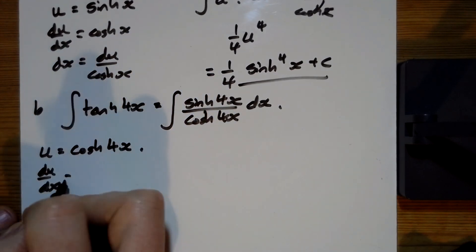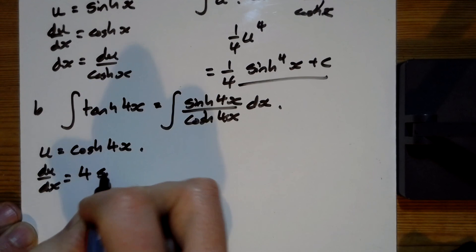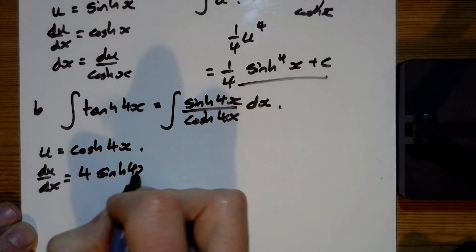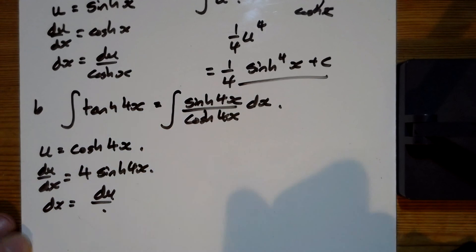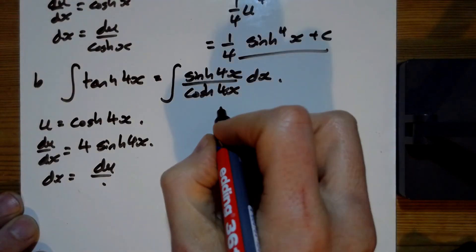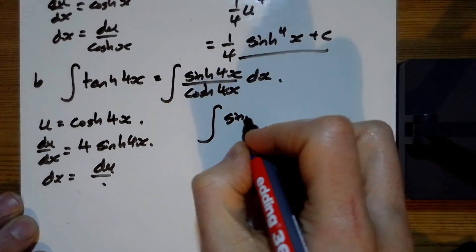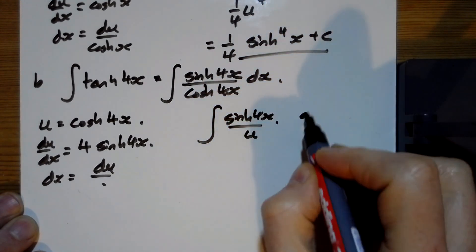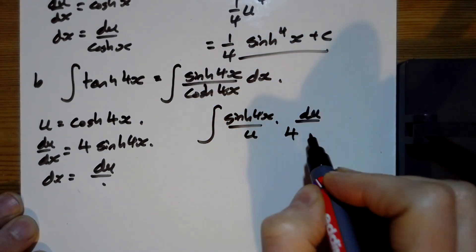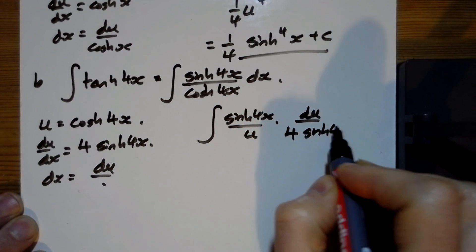and dx is equal to du over that. So the integral we've got here is the integral of sinh four x over u times by du over four sinh four x.